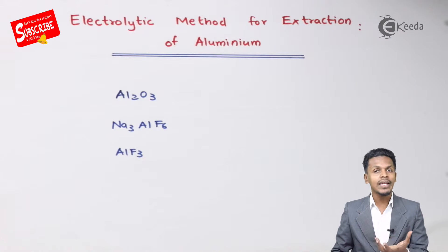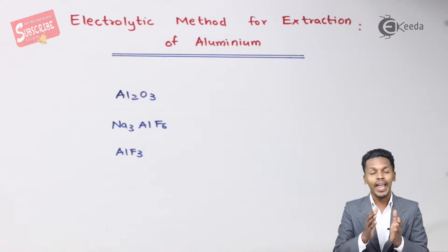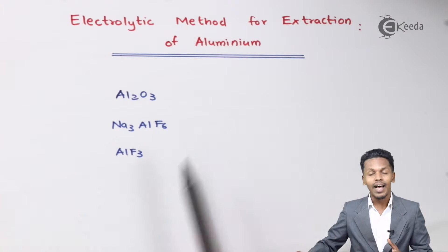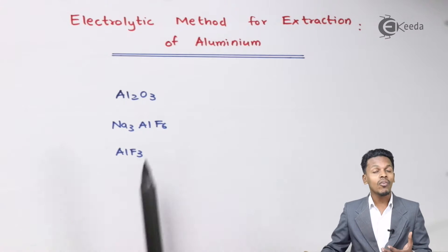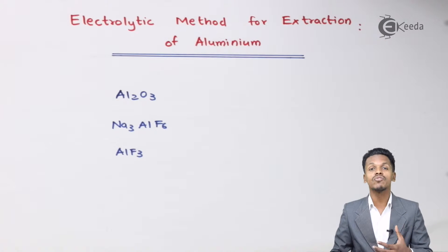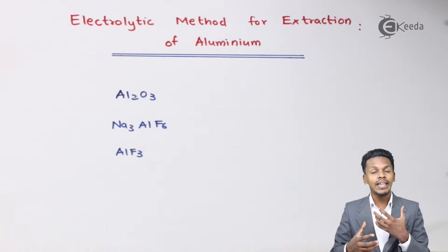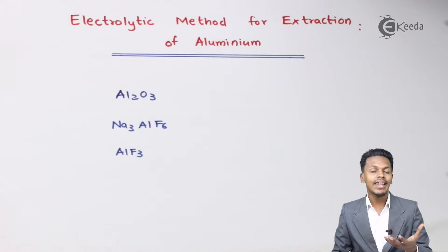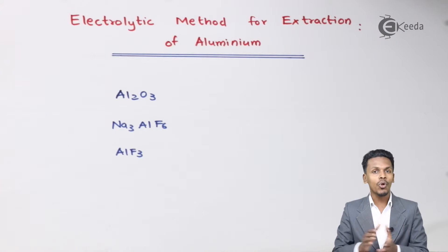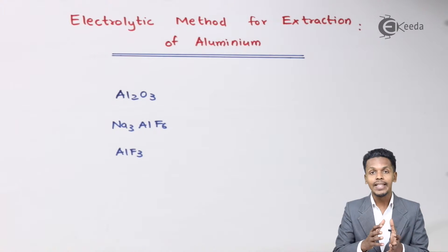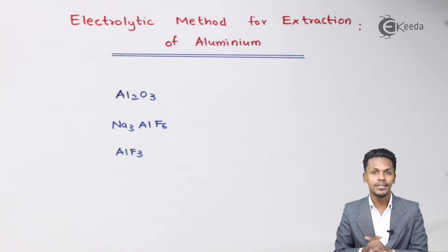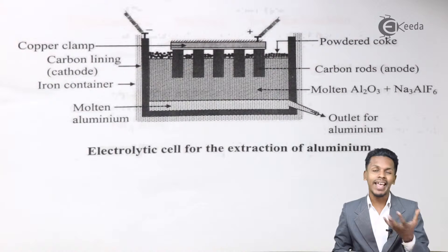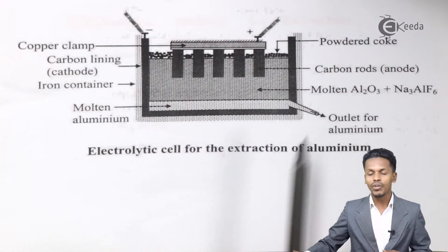We have to consider a particular container, and that container is made up of iron. That container should also consist of an anode as well as cathodes, along with the electrolyte. We will also add certain substances which will increase the conductivity and increase the thermal ability to convert those ores into their corresponding metals. Let us understand a particular diagram and based on that we are going to understand how the electrolytic method of extraction of aluminum is done.